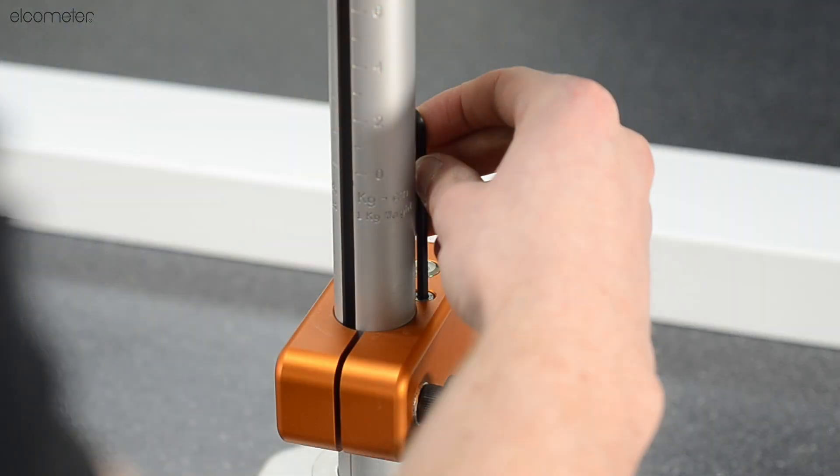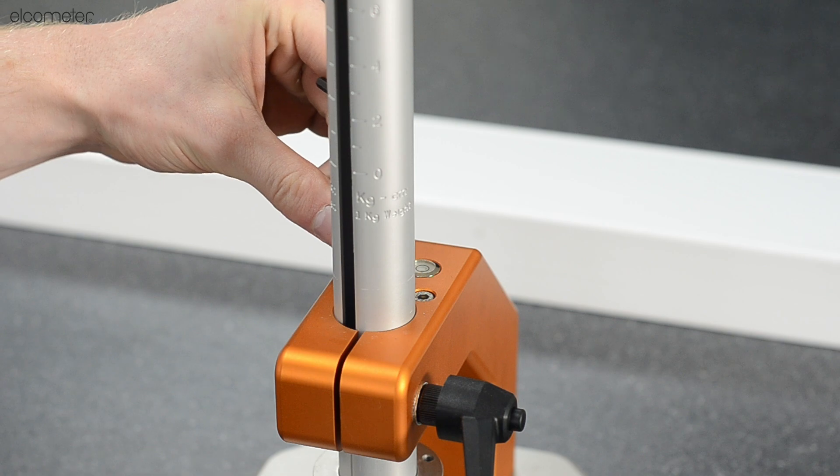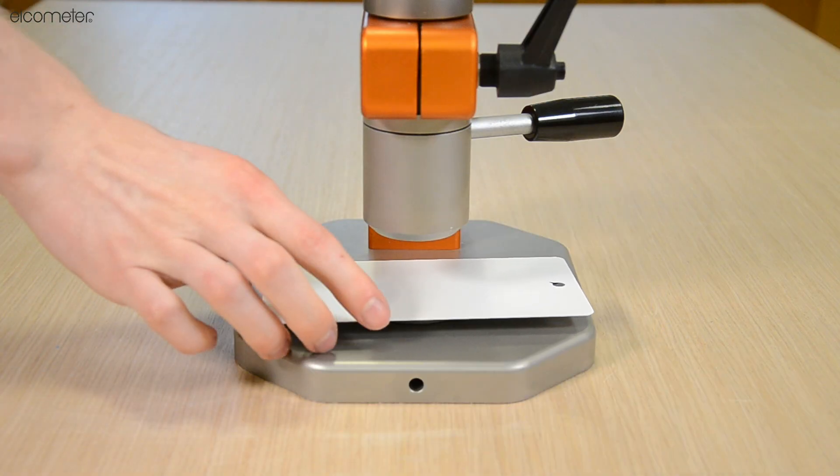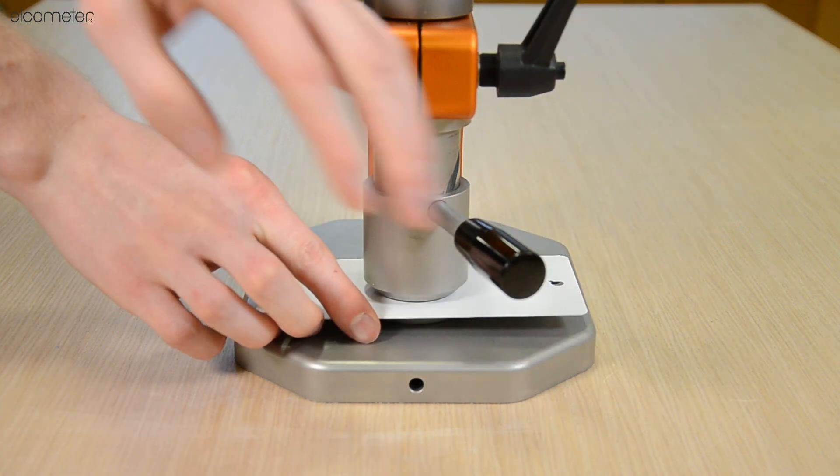Secure your clamp by tightening the included screws using the included hexagonal wrench. Place your sample onto the die and secure it into place by lowering the clamp.